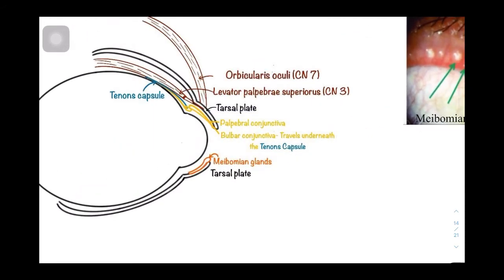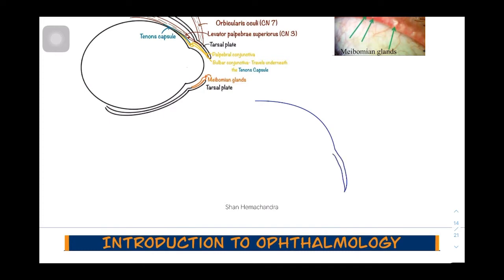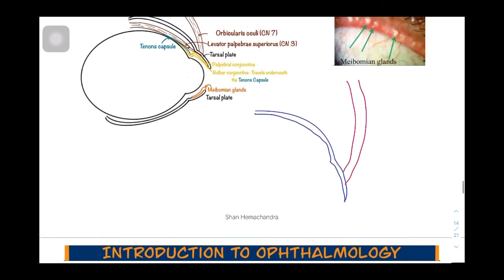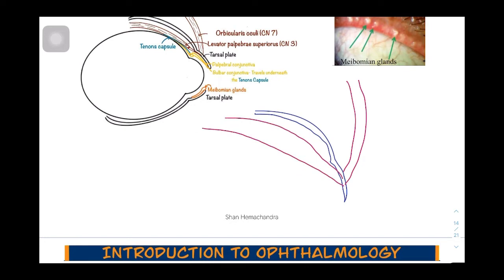The tarsal plate is a fibrous structure that gives attachment to the muscles. The orbicularis oculi goes circular around the tarsal plate and closes the eye. The levator palpebrae superioris comes from within, inner to the tarsal plate, and keeps the eyelid open — pulling the tarsal plate upwards.